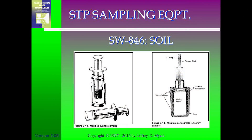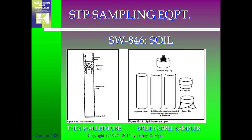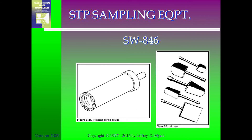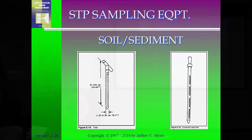Encore-type syringe samples are used for volatiles — probably as good a sampling device as we can come up with for that purpose. There are also various soil profilers, thin-wall tubes, split spoons, split barrel samplers, different auger tips, and rotating core devices. Diamond-impregnated cores are used for rock. Triers and thieves introduce bias, but a lot of times they're all we have. So sampling is always a challenge across all these device types.